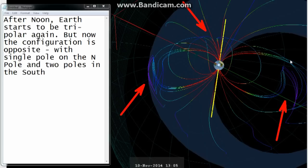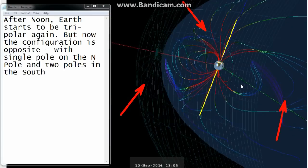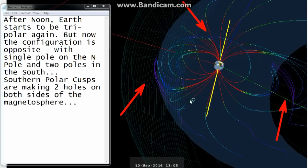After noon, Earth starts to be tri-polar again, but now the configuration is opposite, with a single pole on the north pole and two poles in the south. Southern polar cusps are making two holes on both sides of the magnetosphere.